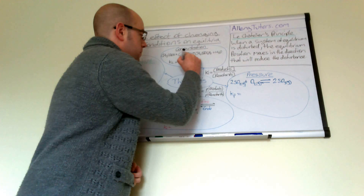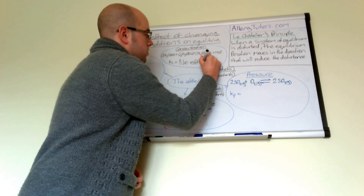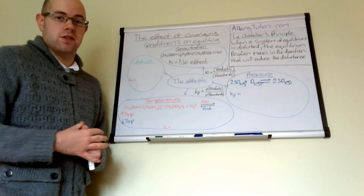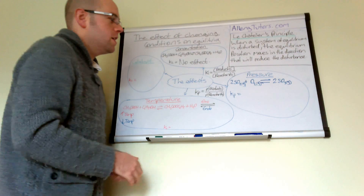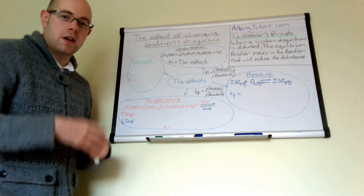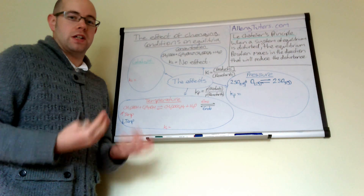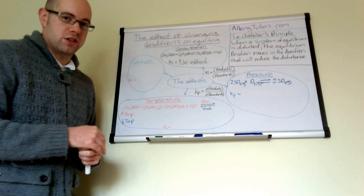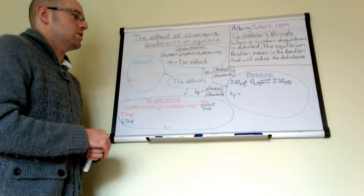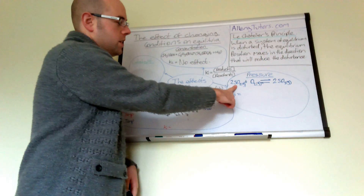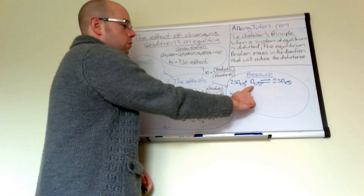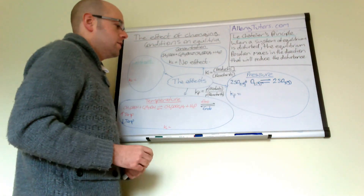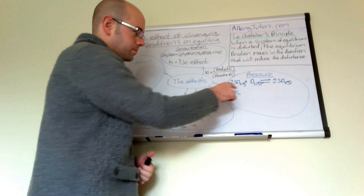The effect on Kc in this case is no effect — even if we alter the concentration of our reactants or products, Kc doesn't change. Moving on to pressure: this is very similar to concentration, except we're dealing with gases, so instead of concentration we measure partial pressure. Some exam boards include this, so check your syllabus. We have sulfur dioxide here: two molecules of SO₂ plus one molecule of O₂ produce two molecules of SO₃.